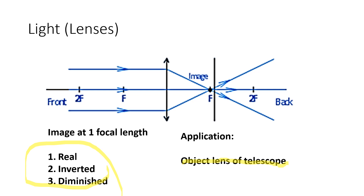For the first diagram, always start by drawing the axis. Then draw four equal equidistant points — one, two, three, four — equal distance from the optical center on each side. That marks your focal length. If the textbook shows a different diagram, follow the textbook one; otherwise this is fine.